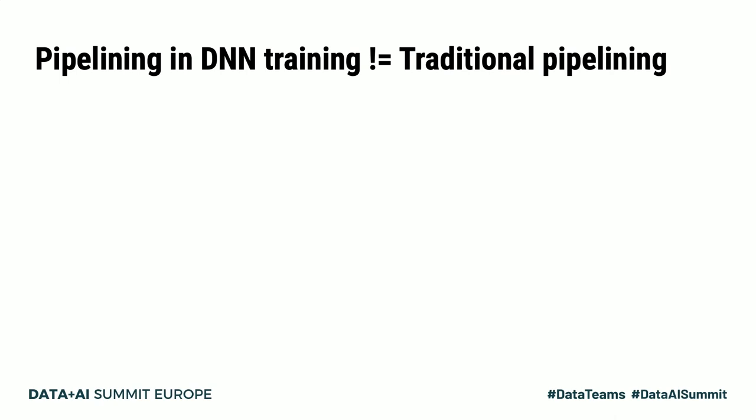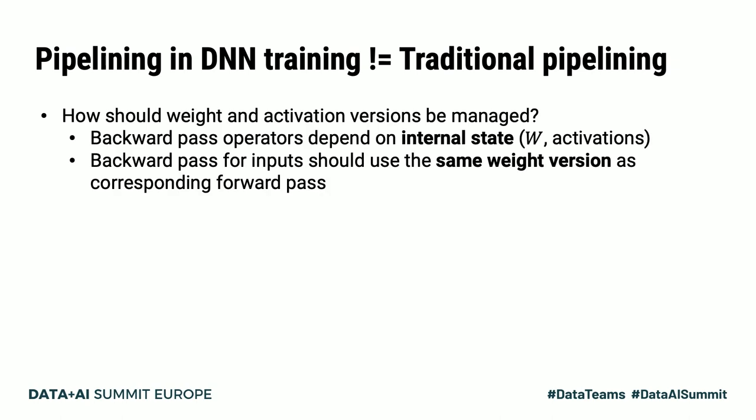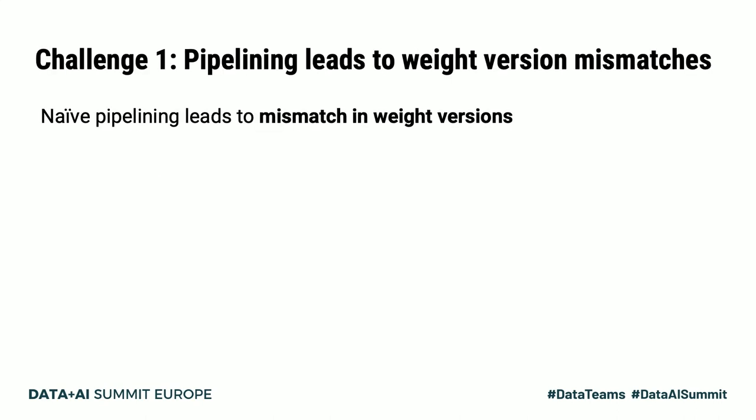Even though pipelining is a common performance optimization used in computer systems, pipelining in DNN training is challenging for two main reasons. First, backward pass operators are stateful and depend both on the weight parameters and the intermediate activations computed during the corresponding forward pass. For clean weight update semantics, the backward pass for a particular input needs to use the same weight version and intermediate activations that were used in the forward pass. In other words, naive pipelining can lead to a mismatch in weight versions.